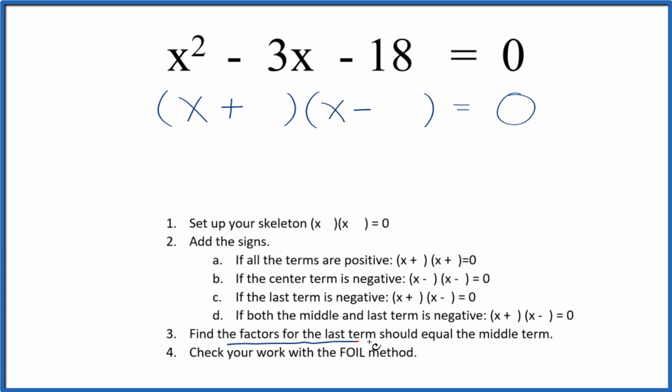Next we'll find the factors for that last term, the negative 18. They're going to add up to the middle term, the negative 3. So let's write the factors for 18. I'm looking for factors that have a difference of 3.